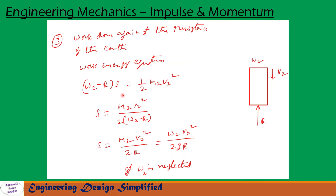Now let us find s, the distance moved by the pile against the ground resistance r. The pile gains velocity v2 after impact. Applying the work-energy equation: forces on the pile are its weight w2 acting downward and ground resistance r acting upward. The work-energy equation becomes (w2 − r)·s = half·m2·v2², so s = m2·v2² / [2·(w2 − r)], where s is the distance moved in a single blow.